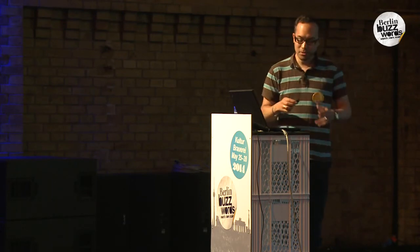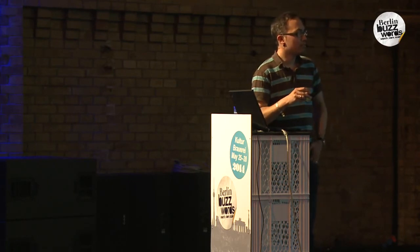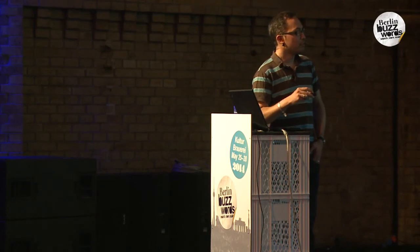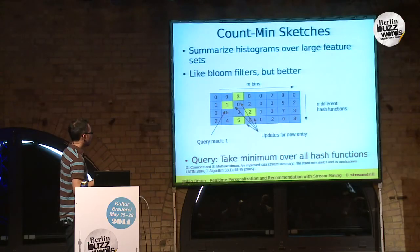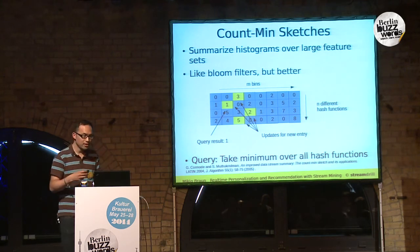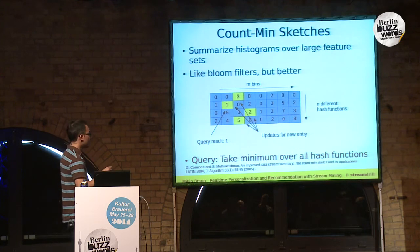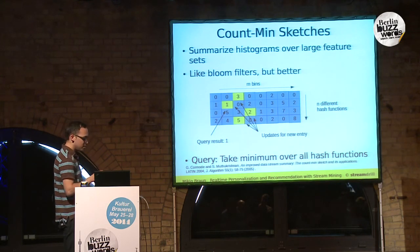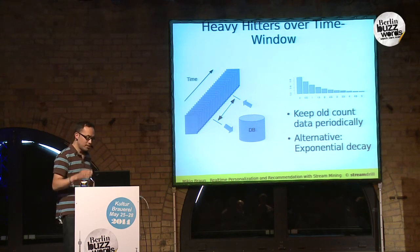Count-Min Sketches are good when you want to query without retrieving a ranked list, and you want a better approximation for all entries. For the smaller ones in the heavy hitters approach, the error is usually quite large. So instead of SQL-style counting, you can use a data structure like this to get approximate counts without using much memory.